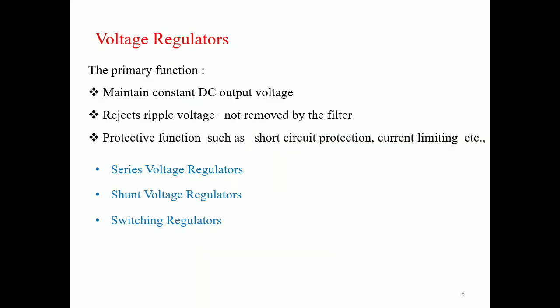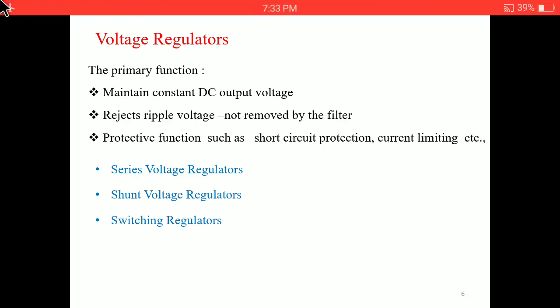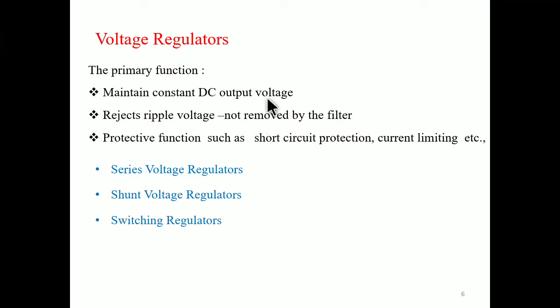With this introduction, we will move on to voltage regulators. The primary function of the voltage regulator is to maintain a constant DC output voltage. It also rejects the ripple voltage not removed by the filter. The regulator may also include protective functions such as short circuit protection and current limiting. There are three types of voltage regulators: series voltage regulator, shunt voltage regulator, and switching regulators.